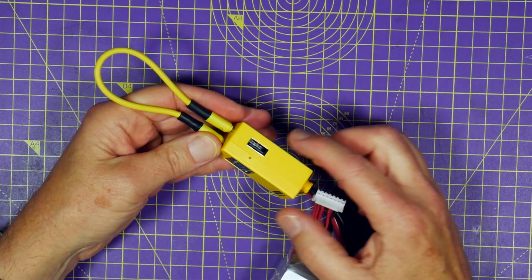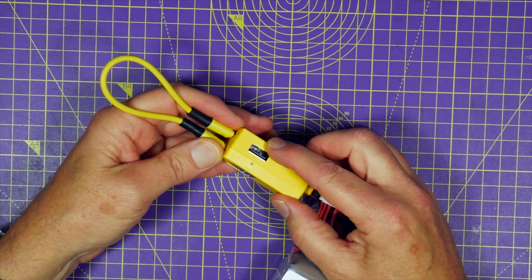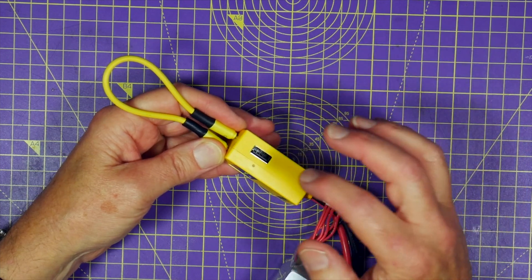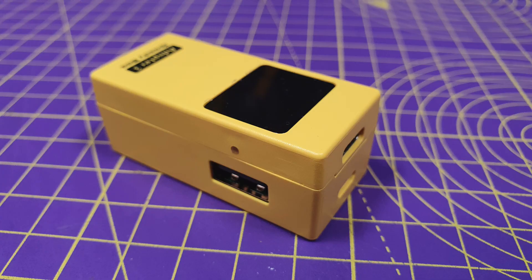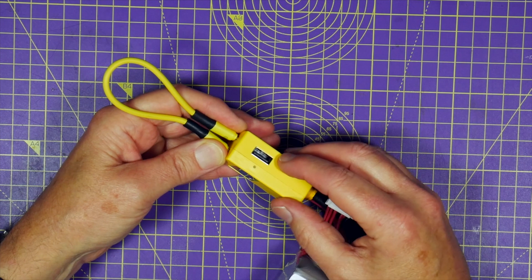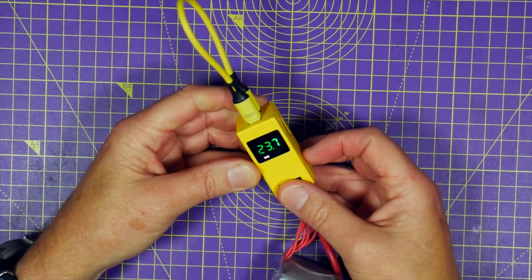And on the side here is a USB charge output, and that means you can charge your phone or tablet. And it supports all the fast charging protocols like QC3, AFC, Apple 2.4a, with over current, short circuit and over temperature protection built into here.